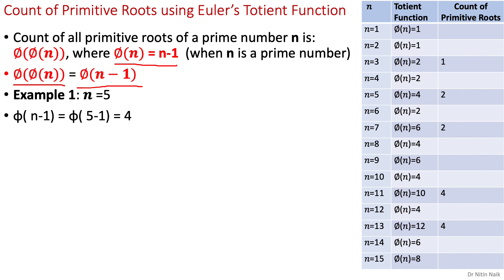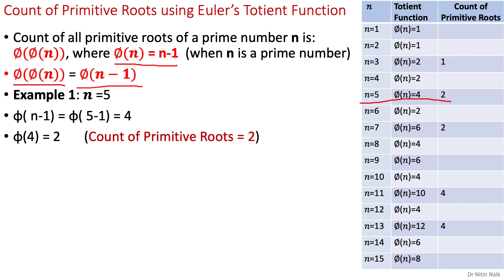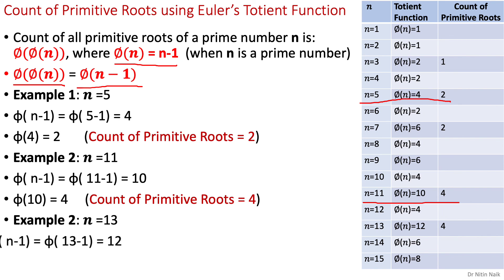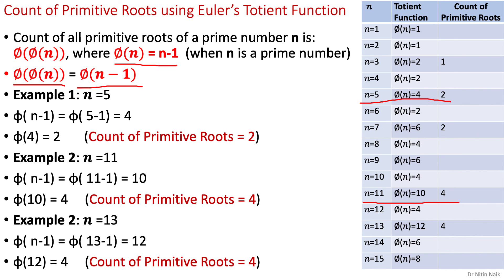Let's look at examples. For n equals 5 (prime): φ(n−1) = φ(4) = 2, so there are 2 primitive roots. For n equals 11: φ(10) = 4, so 4 primitive roots. For n equals 13: φ(12) = 4, so 4 primitive roots. The table shows n, the totient function value of n−1, and the count of primitive roots for each case. This is how we easily calculate the count of primitive roots using Euler's totient function.